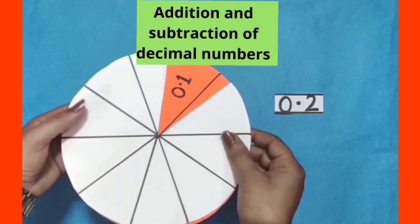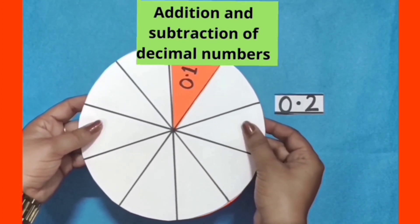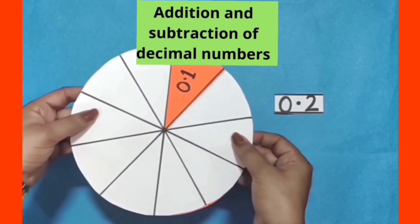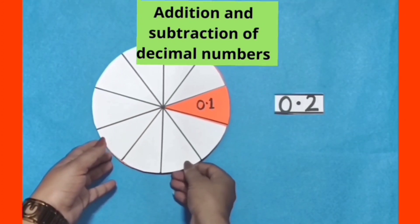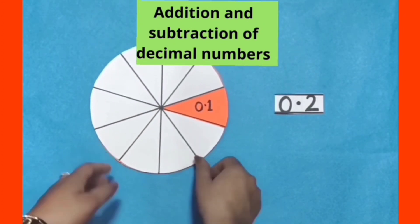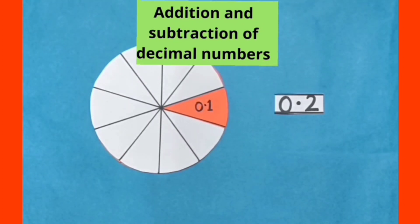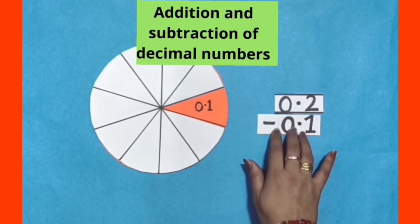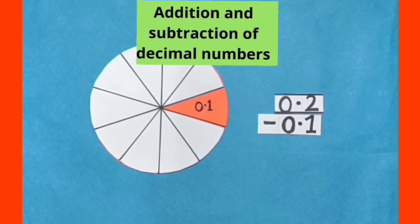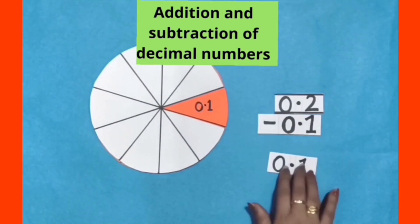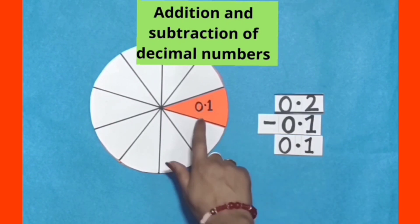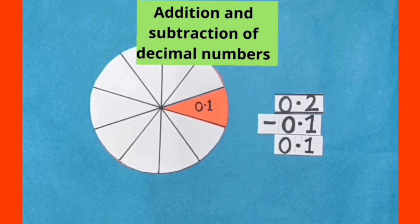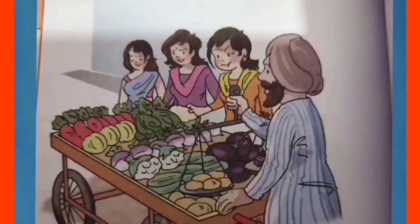That means we will subtract 0.1 from 0.3 to get 0.2. In the same way, when we move these circles further, we are left with 1 colored part of the circle and its decimal form is 0.1. That means we have to subtract 0.1 from 0.2 to get 0.1. In this way, we can do subtraction of decimal numbers.